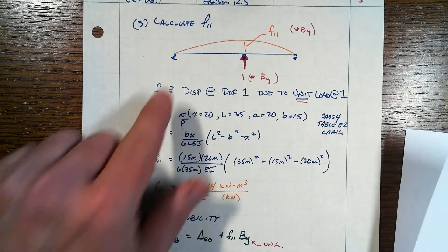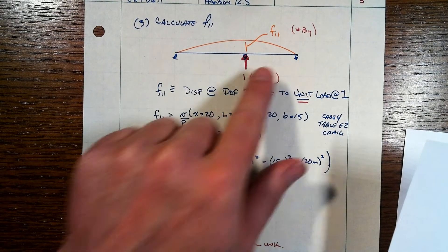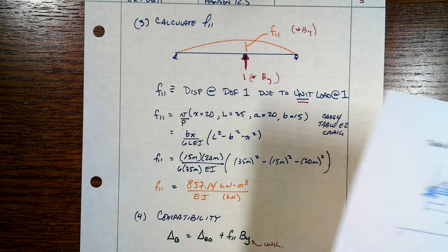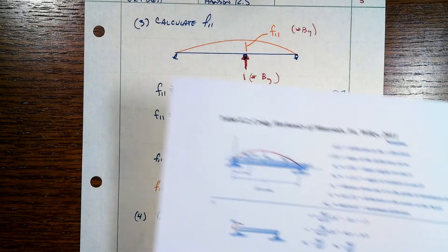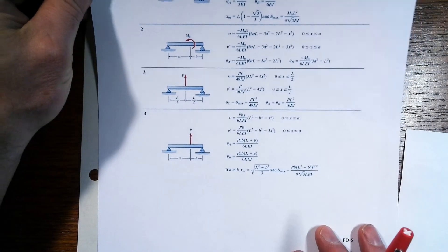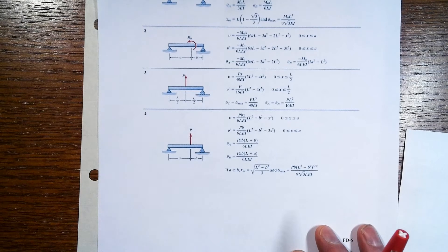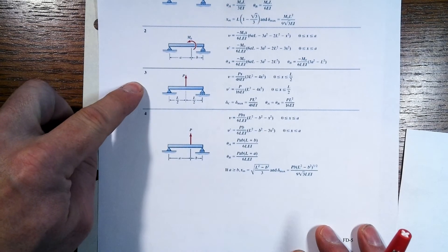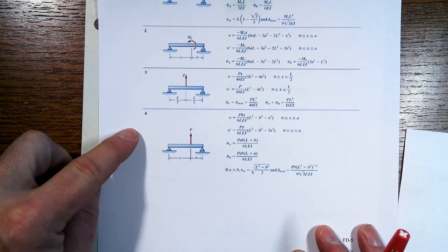This case is a simply supported beam with a point load, but that point load is asymmetrically placed. So when you go look in your beam tables, you've got to be a little careful here. We don't want case 3, we want case 4.